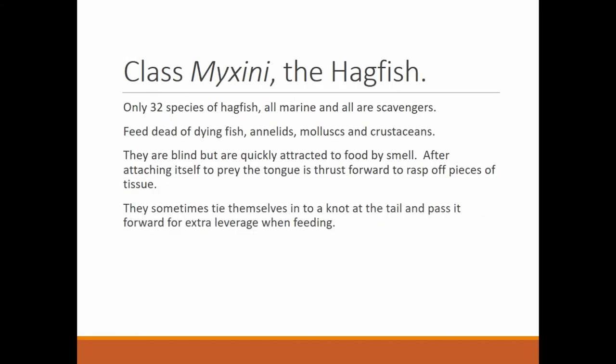Our first group is class Myxinii — these are the hagfish. There are only 32 species of hagfish, all are marine, found in the ocean, and all are scavengers — they clean up dead and decaying animals. They feed on dead or dying fish, annelids, molluscs, and crustaceans. They are blind but are quickly attracted to food by smell, and after attaching to prey, the tongue is thrust forward to rasp off pieces of tissue, similar to the way a snail eats with its radula.